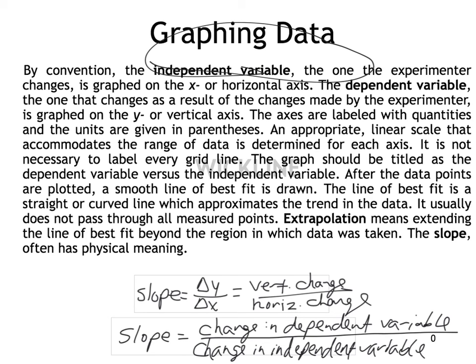The axes should be labeled with the quantities they are measuring, and the units should be given in parentheses. For instance, if the y-axis is mass in kilograms, label it 'mass' and note 'kilograms' in parentheses. If the x-axis is time, label it 'time' and put 'seconds' in parentheses as the unit.